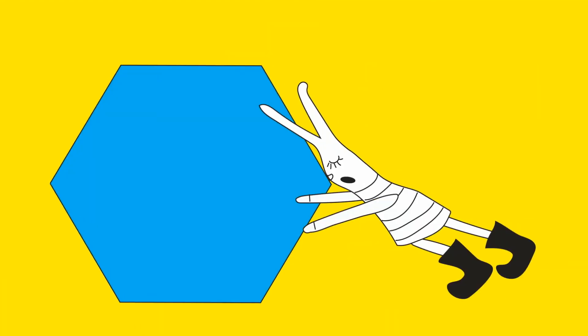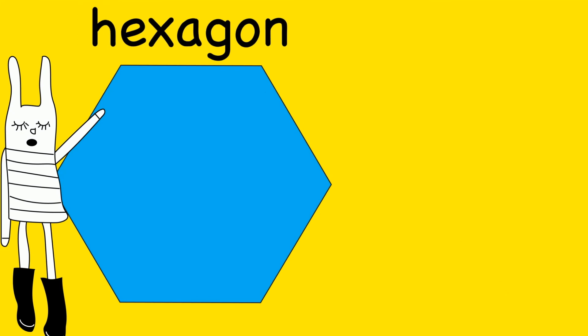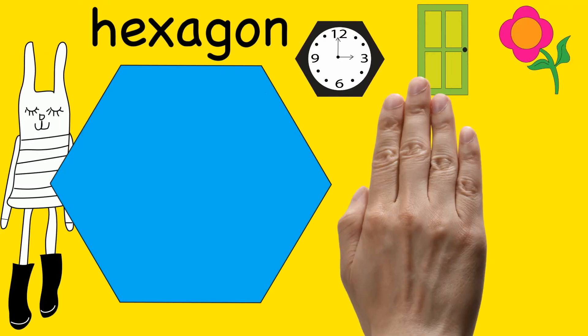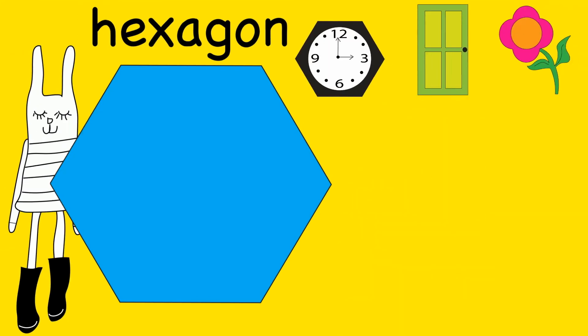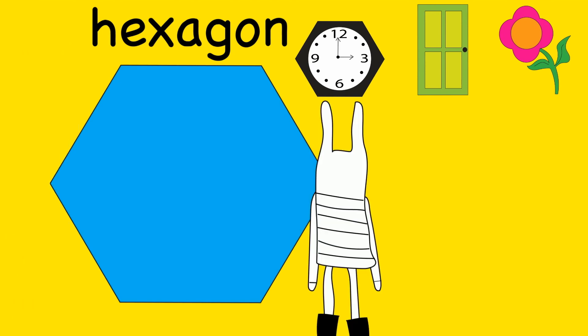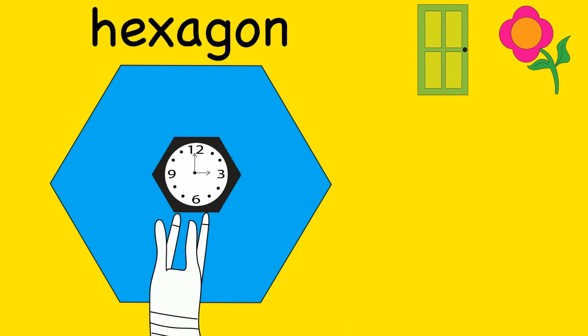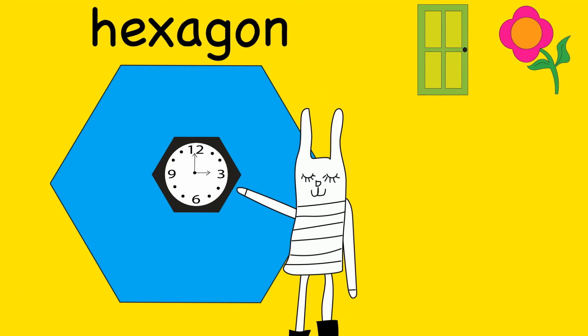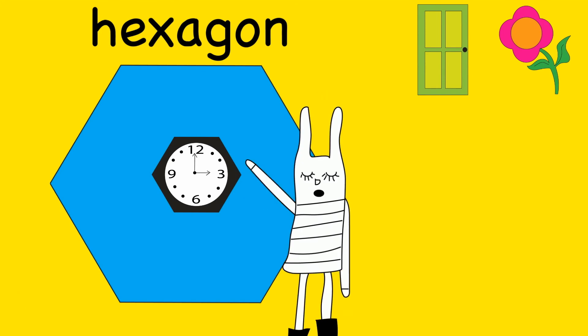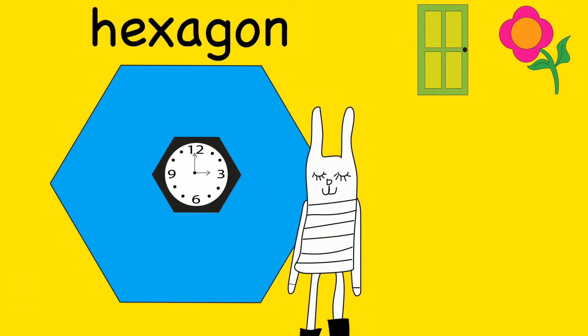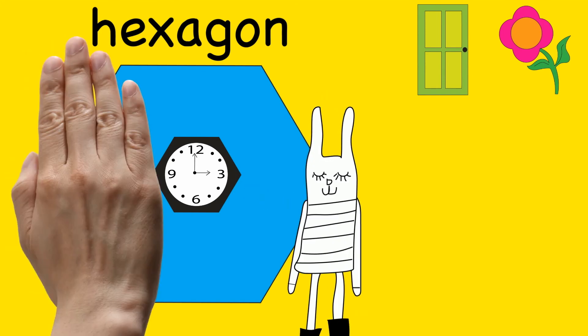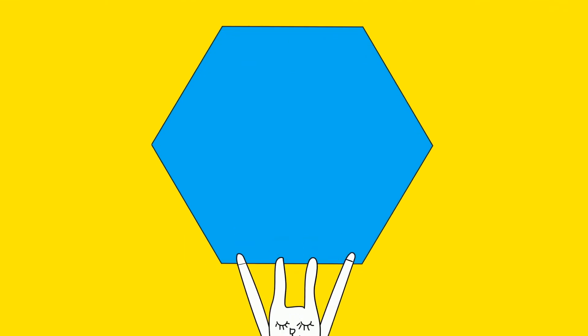I see a hexagon. Can you show us an object that is shaped like a hexagon? The clock is shaped like a hexagon. Hexagon.